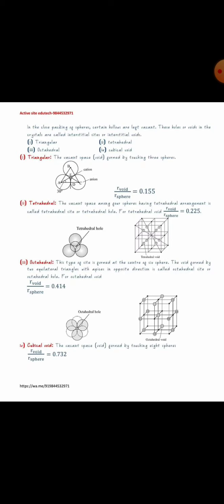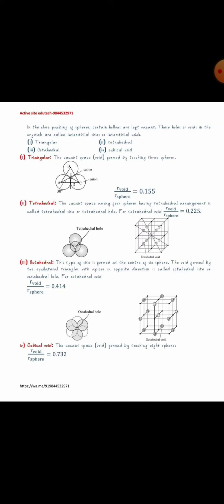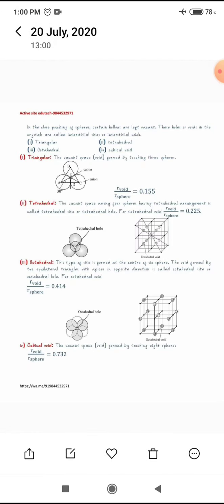If we look at the plane of a crystal formed by rows of constituent particles, which we treat as spheres, we can easily locate some triangular empty spaces. These triangular empty spaces are called interstitial sites, interstitial vacancies, or interstitial voids. Four types of voids are formed in crystalline solids: triangular void, tetrahedral void, octahedral void, and cubical void.